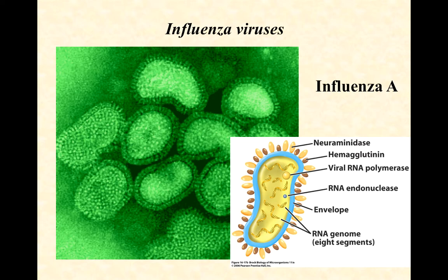What you see in this image is influenza A, one of the more common broad categories of influenza viruses. They look big and squishy because they have an envelope around them, and the envelope is not a hard structure. Take a look at the diagram in the bottom right and look at the different pieces and parts involved in an influenza virus.